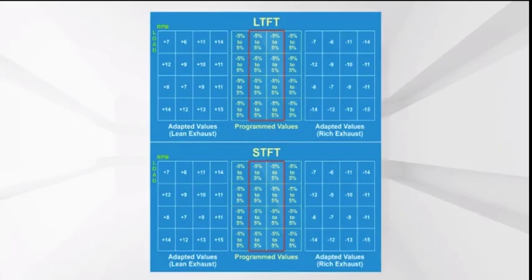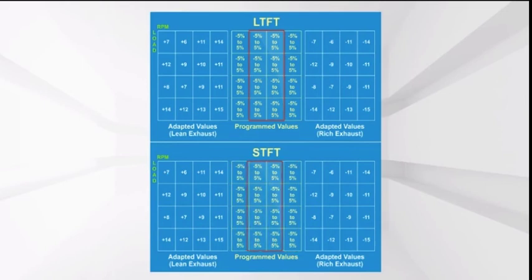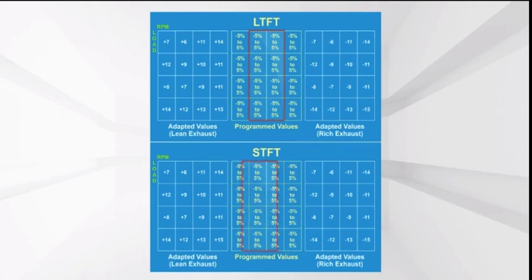With a properly functioning engine in closed-loop, STFT will typically fluctuate within a narrow range of plus or minus three percent. On V-type engines, the scan tool will display fuel trim according to cylinder bank — i.e., STFT-1, STFT-2, LTFT-1, and LTFT-2.